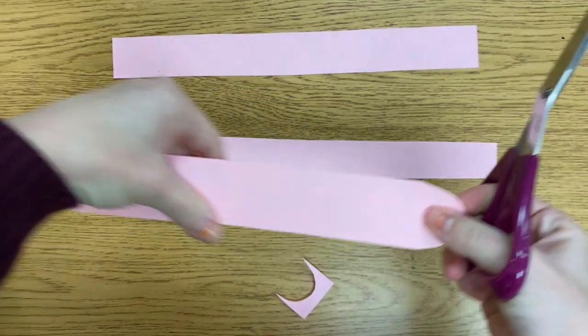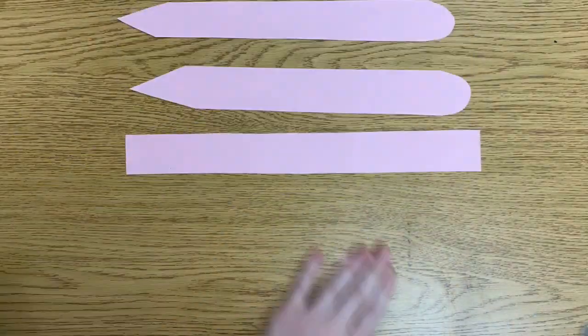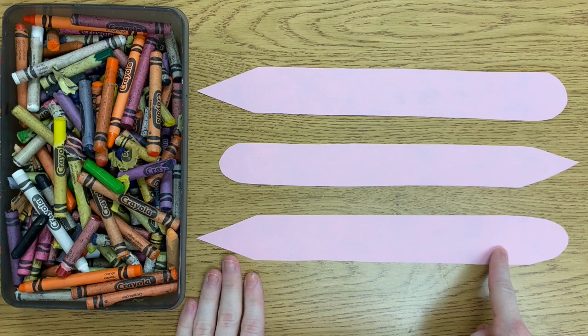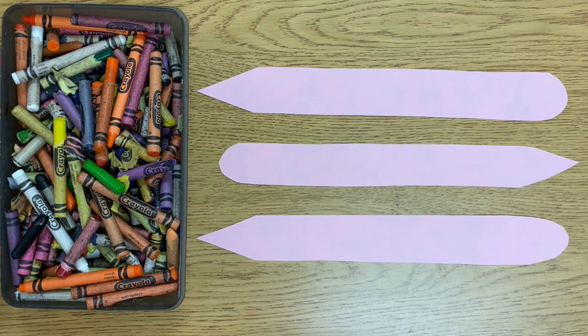Remember, try to keep your snake as long as possible. Do this on all three strips. Next, I'm going to lay out my snakes. Notice how I have two going one direction and one going the opposite. Make sure you set yours up like this.